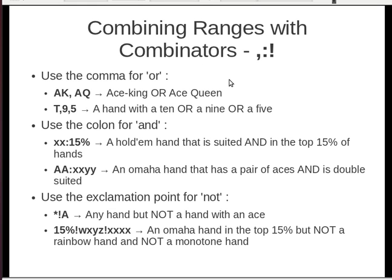A combinator is just a fancy word for something that combines stuff. You use the comma for OR. So ace-king, ace-queen is an ace-king or an ace-queen. Ten comma nine comma five is a hand with a ten, or a nine, or a five, or some combination.